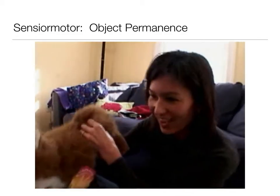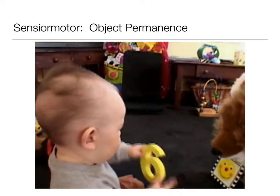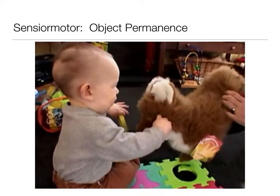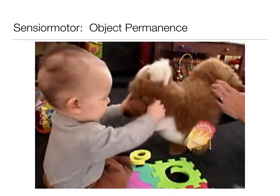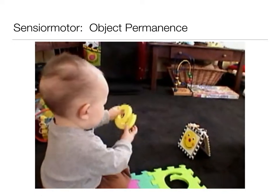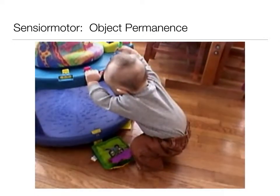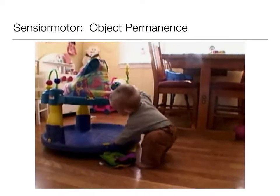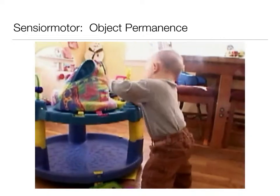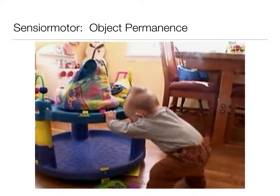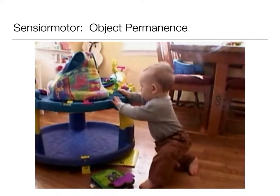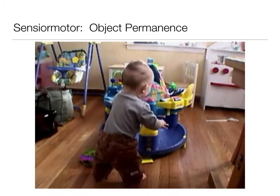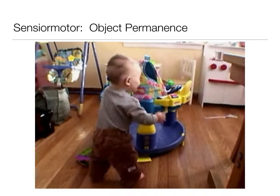At about eight months of age, children show the first signs of planned, intentional behavior. Nine-month-old Hayden drops one toy to grasp another, and figures out how to move an obstacle — the exersaucer — to pick up a desired toy. He has learned that one secondary circular reaction can be used in the service of another, using two previously acquired schemes in coordination to achieve a goal.